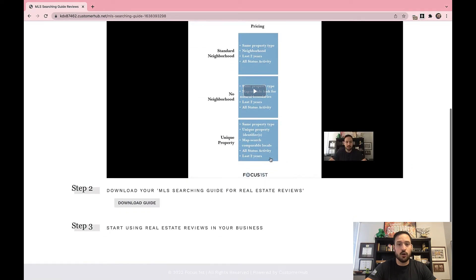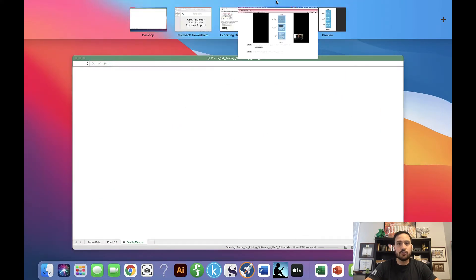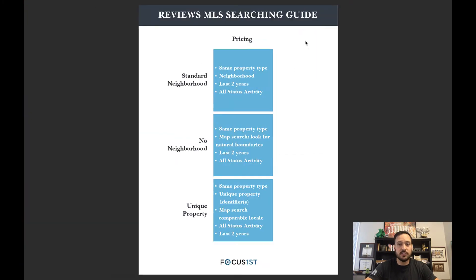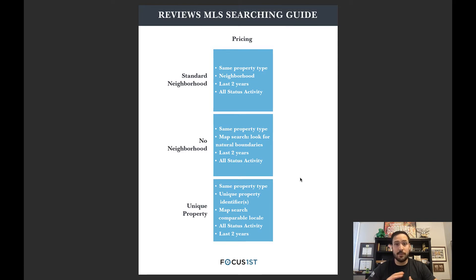If you click there, you'll find a quick video on how to use it and a download link. After downloading, you'll get a PDF that guides you on how to get the right data for the software. This is the right data for the software so you can find the right patterns — not necessarily what you would normally use. It's very important that we have the right amount of data and enough information to get you accurate neighborhood information.